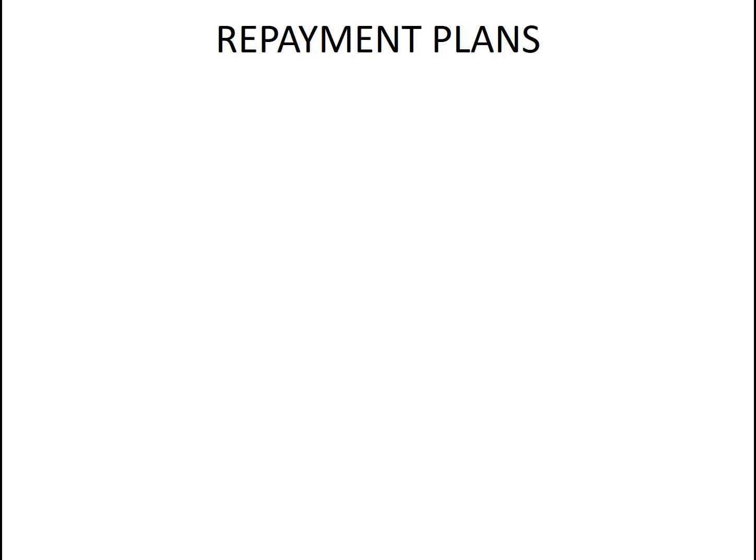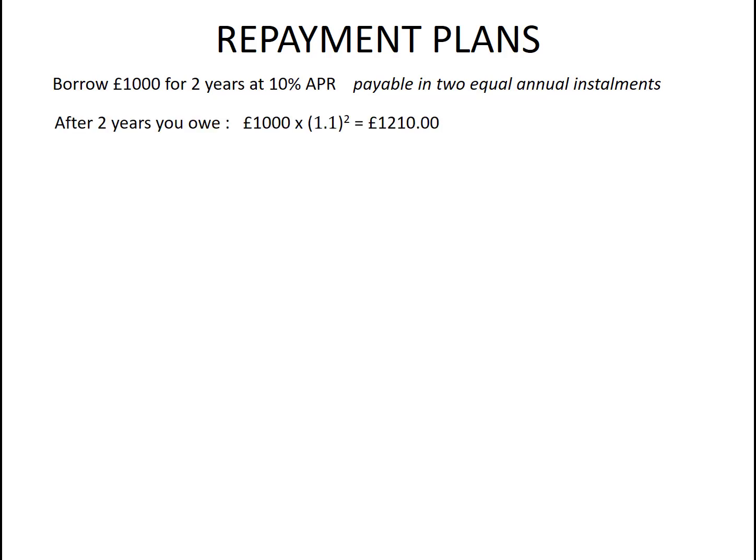To keep the numbers easier, we're going to use an invented plan where we're borrowing £1,000 for two years at 10% per year, payable in two equal annual instalments. In practice you very often pay back monthly, but the same principle applies — the calculations just get rather tedious. We just worked out that after two years we'd owe £1,210 if it was just ratcheting up at 10% a year. So it might make sense to divide the total by two and make two payments of £605. Let's see how that actually works out in practice.